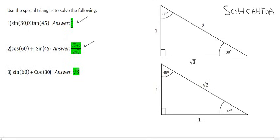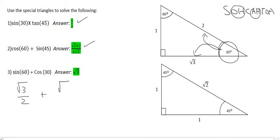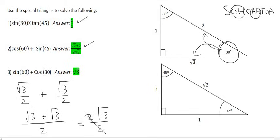Moving on to the last one: sin of 60 plus cos of 30. Sin 60 — we go to the 60 degree, and sin is opposite over hypotenuse, so that's square root three over two. Plus cos of 30: cos is adjacent over hypotenuse, so the adjacent is square root three and the hypotenuse is two — giving square root three over two. We have two fractions with the same denominator, so square root three plus square root three is two square root three over two. The twos cancel, and the final answer is the square root of three.